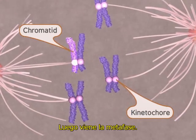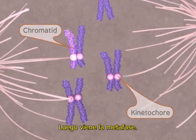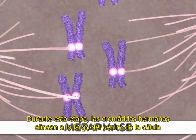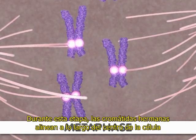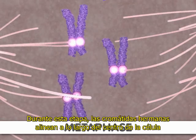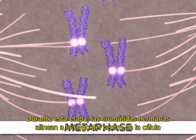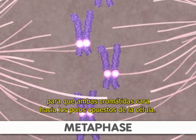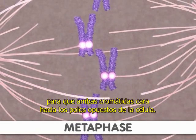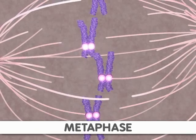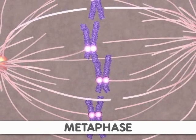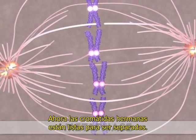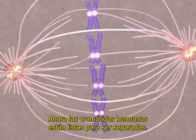Next comes metaphase. During this stage, the sister chromatids align along the center of the cell so that both chromatids face toward opposite poles of the cell. Now the sister chromatids are ready to be separated.